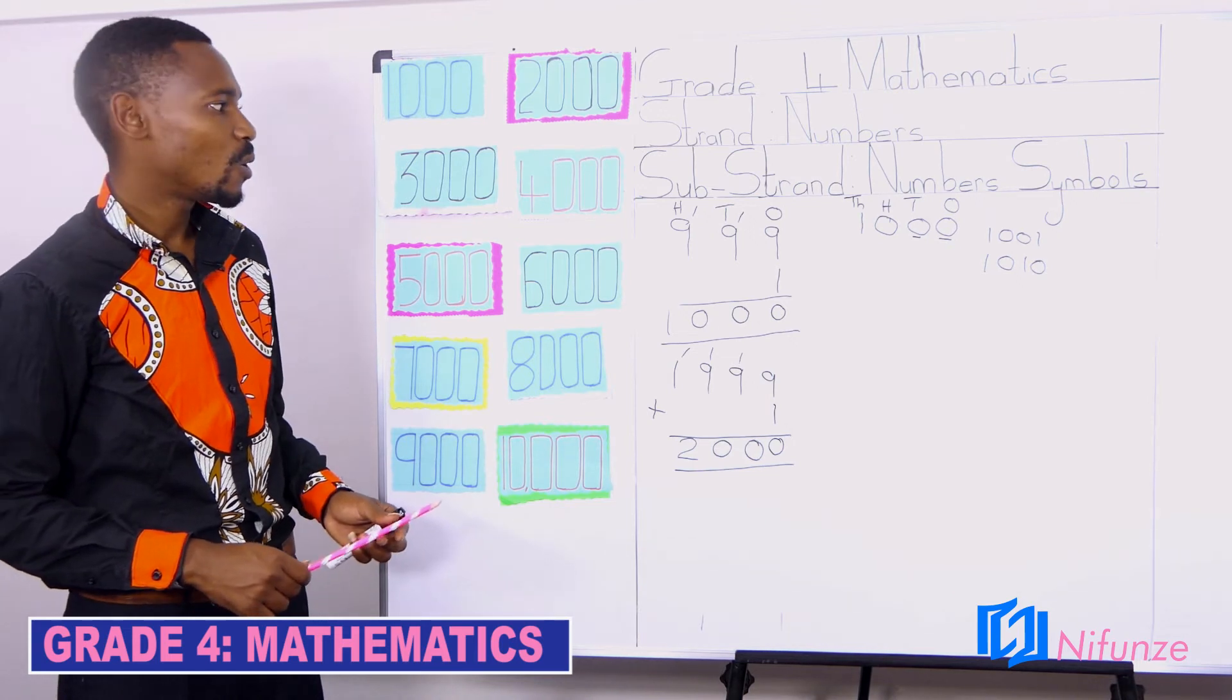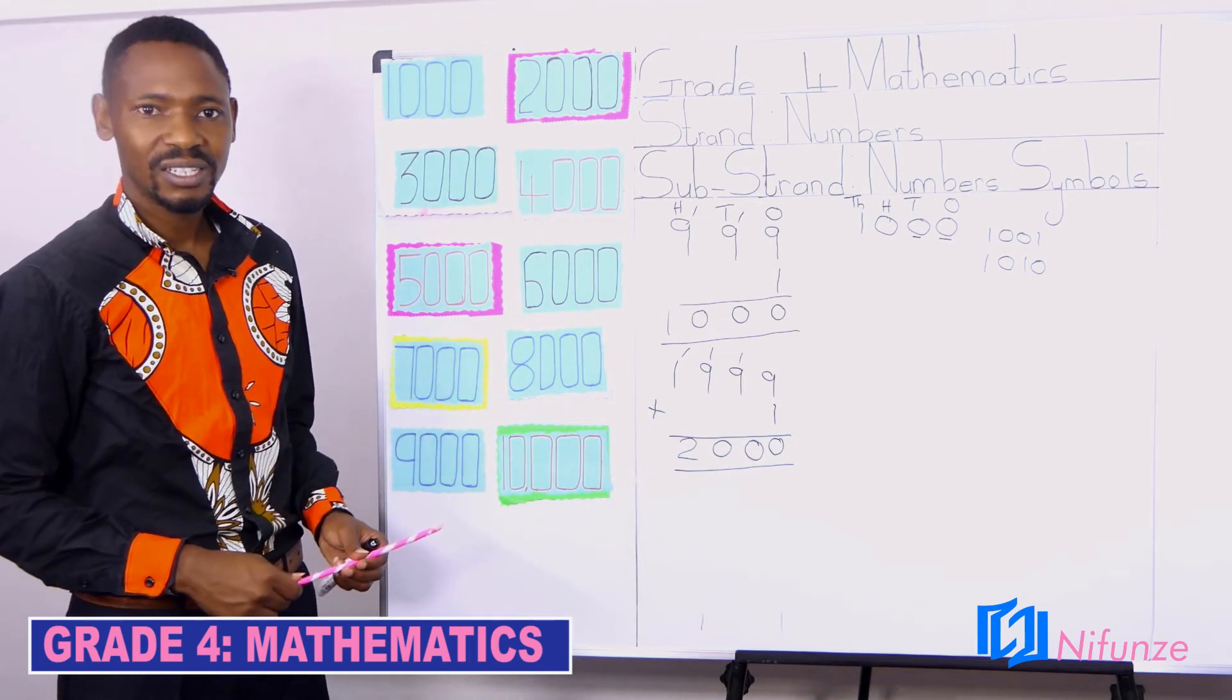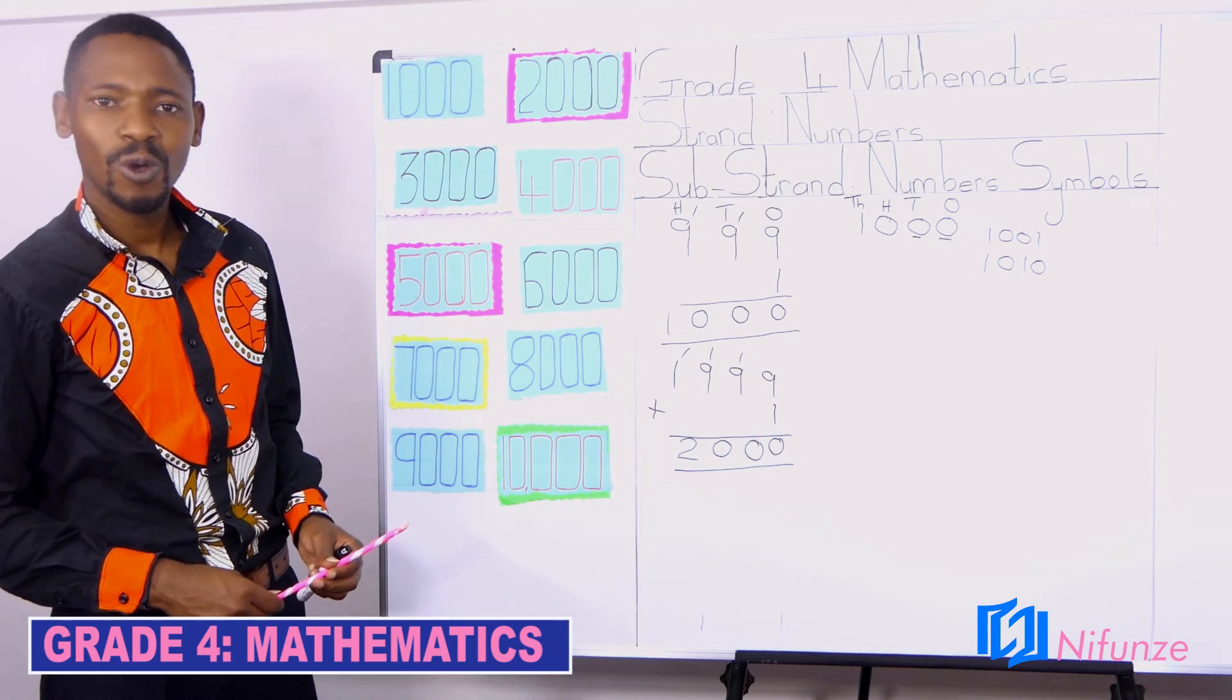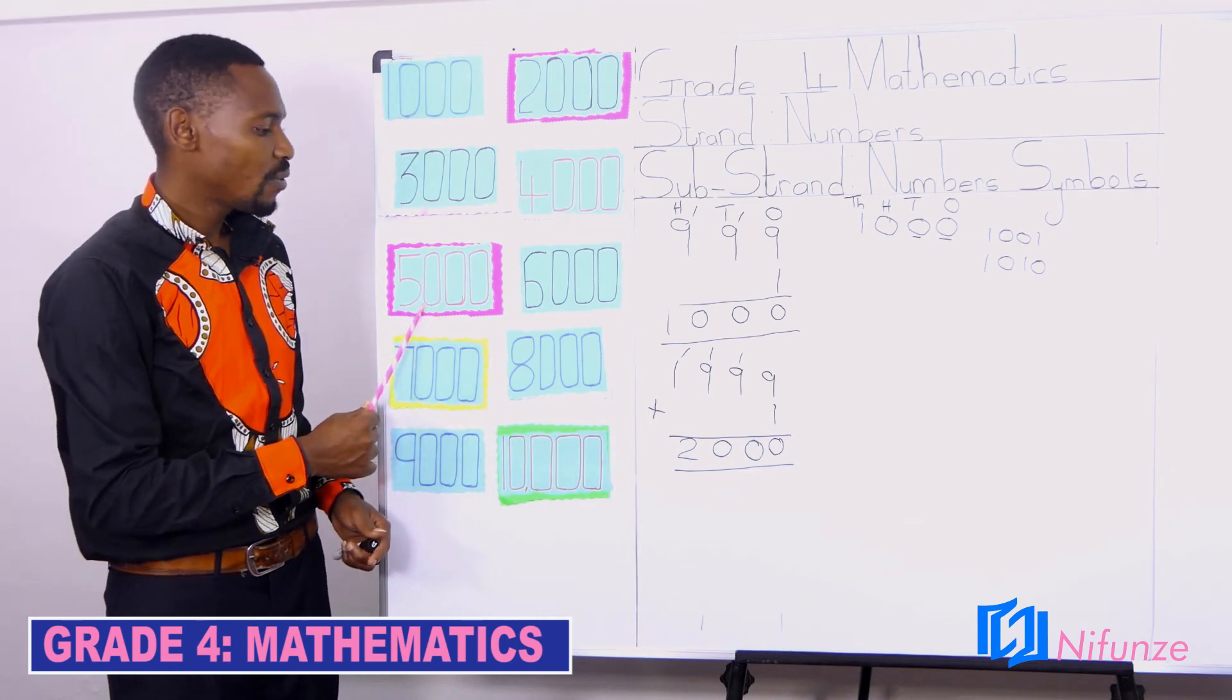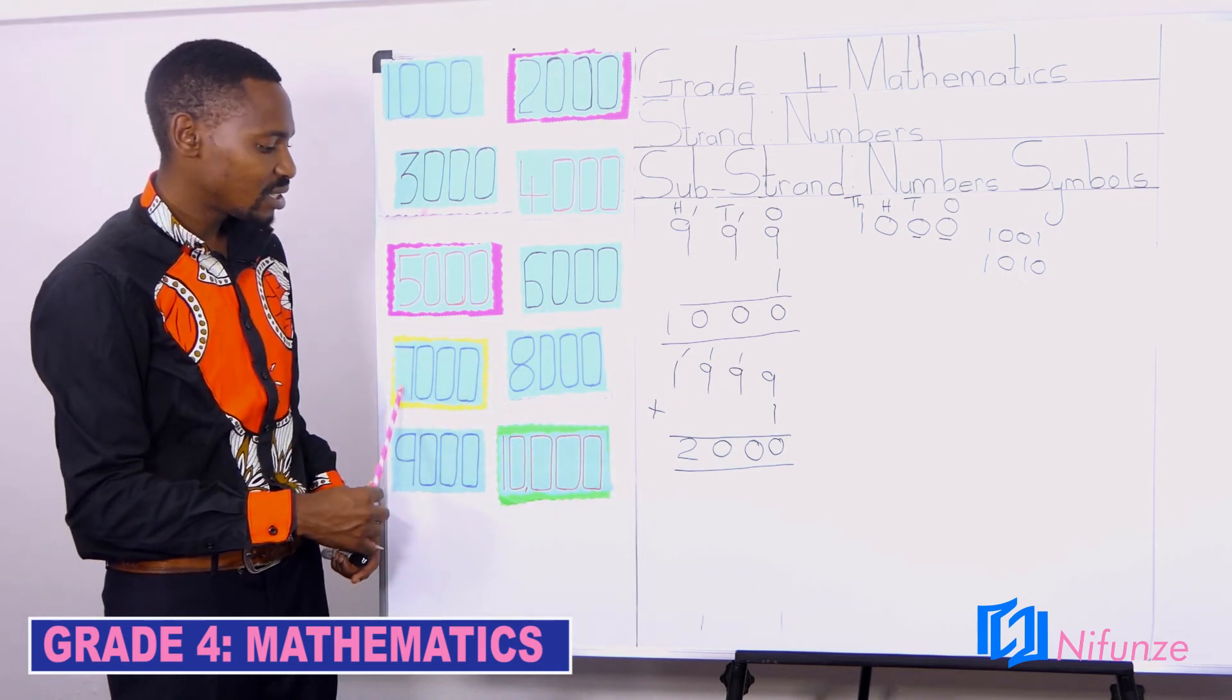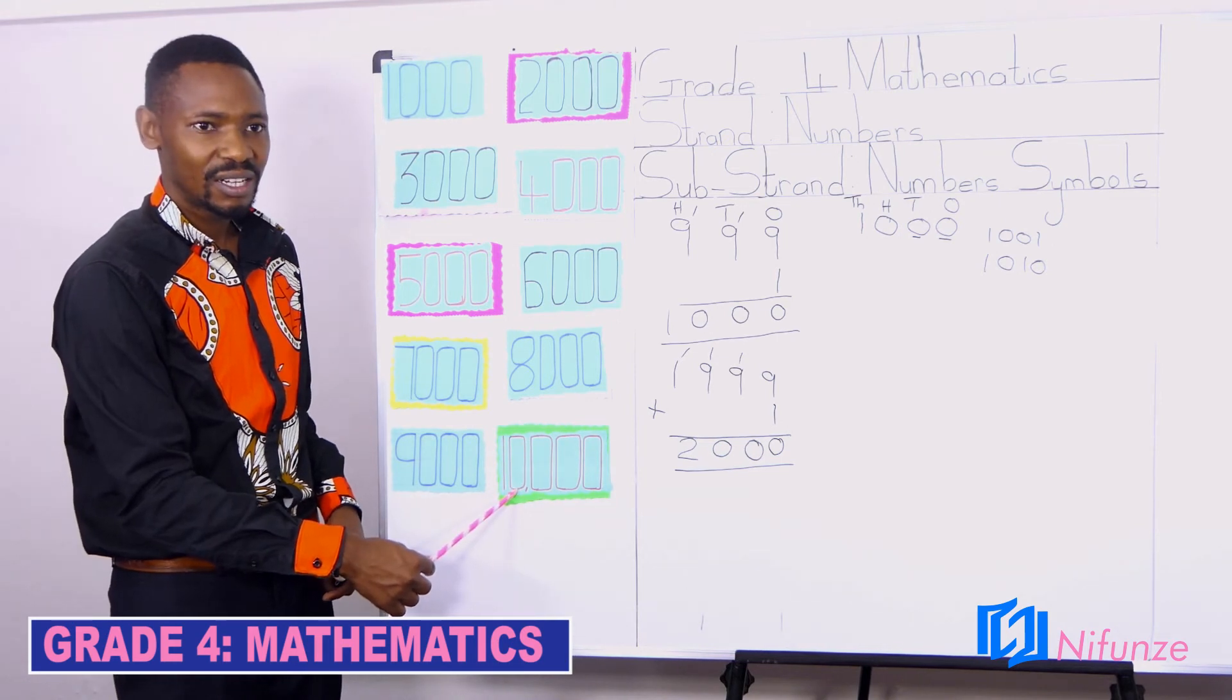So which number comes before 4,000? 3,999. So you can continue writing the numbers which comes before 5,000, 6,000, 7,000, 8,000, 9,000, and 10,000.